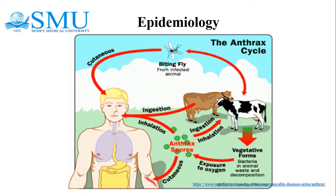Epidemiology of Bacillus anthracis — mode of transmission: anthrax is not known to spread from person to person. Humans can become infected by handling products from infected animals or by breathing in anthrax spores from infected animal products like wool. People can also become infected with gastrointestinal anthrax by eating undercooked meat from infected animals.